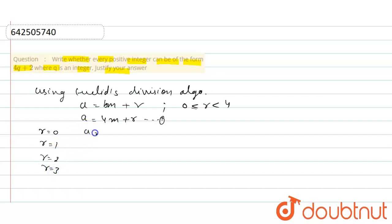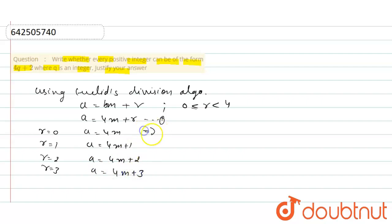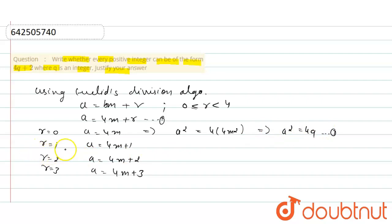So we will get: A equals 4m, A equals 4m plus 1, A equals 4m plus 2, and A equals 4m plus 3. In the first case, if we square both sides, then we will get a² equals 16m². If we write this term as q, then we will get a² equals 4q. So this is the first form.